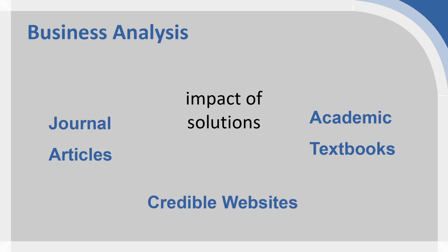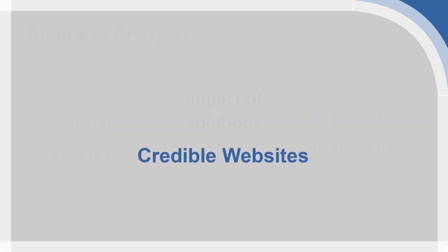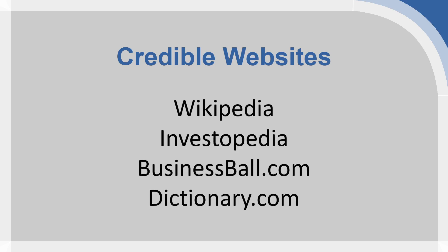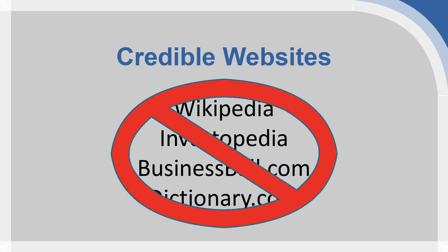As well as going into the academic literature through journal articles via Discover or academic textbooks, you can also use credible websites. Credible websites doesn't mean any website with information you want to use — it means websites you actually have a degree of trust in, that present convincing evidence. Websites like Wikipedia, Investopedia, BusinessBalls.com, and Dictionary.com are not credible websites for different reasons.